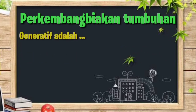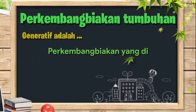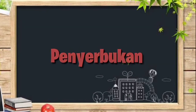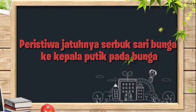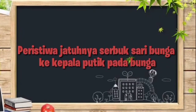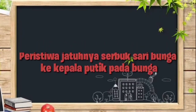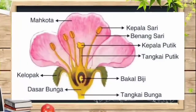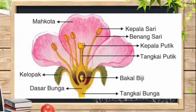Perkembangbiakan tumbuhan secara generatif adalah perkembangbiakan yang dialami oleh tumbuhan melalui proses perkawinan. Biasanya, perkembangbiakan generatif pada tumbuhan itu diawali dengan proses penyerbukan. Penyerbukan adalah peristiwa di mana jatuhnya serbuk sari bunga ke kepala putik pada bunga. Coba kalian perhatikan gambar-gambar bagian pada bunga sepatu berikut ini.